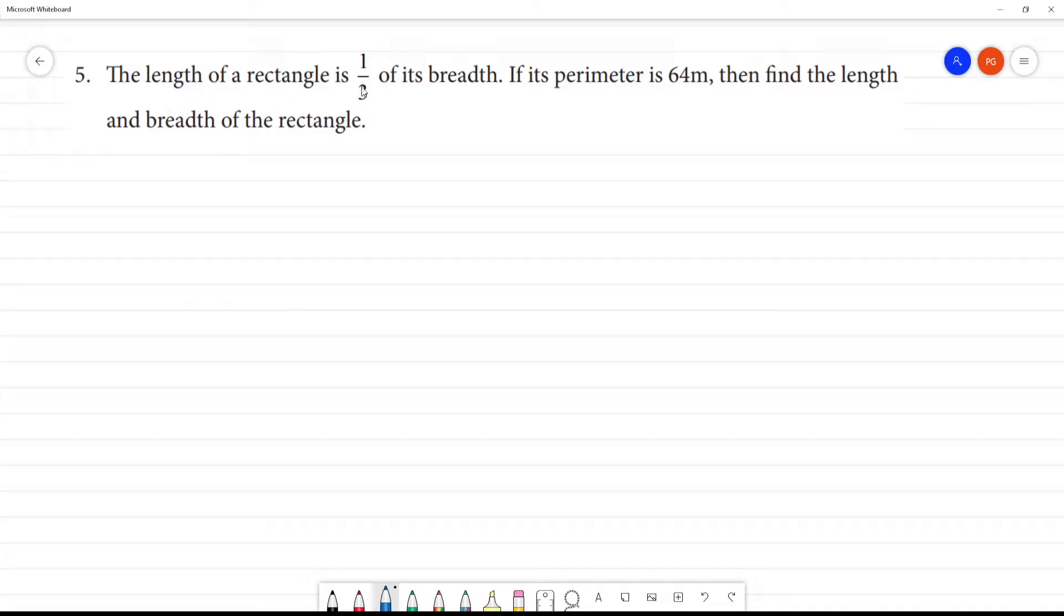The length of a rectangle is 1/3 of its breadth. Length of the rectangle is 1/3 of the breadth. Clear? That means length is equal to 1/3 into b.